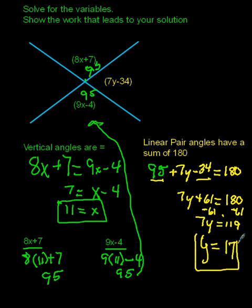So I get a value of 17 for Y up in this situation. So that's how you solve for the variables and showing all the work that's going to lead to our solution for this type of problem. Now I want to double check this to make sure that my arithmetic was correct. So what I'm going to go ahead and do is take a look at the 7Y minus 34.